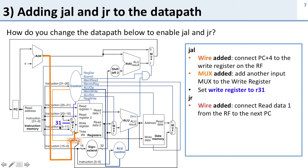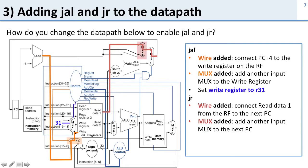For JR we need to do the opposite: take data out of the register file and get it into the next PC. We need a wire coming out of read data 1 that feeds back into the next PC path, so we can load the value from the register file and use it as the next PC. We need another mux to select that value or the previous value, and finally control logic to tell us which one to select.